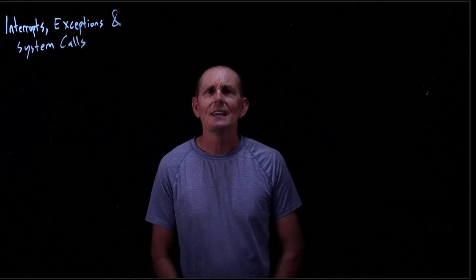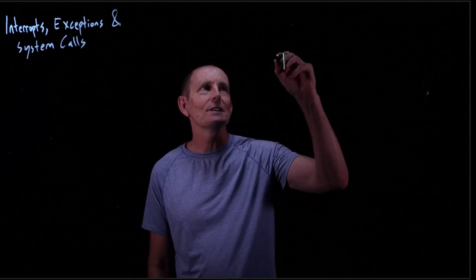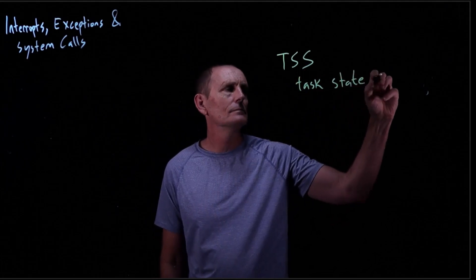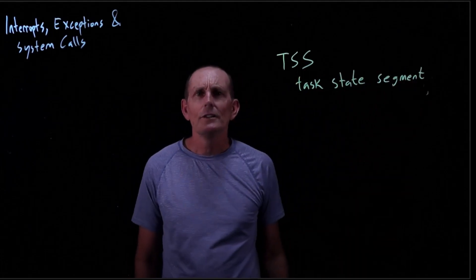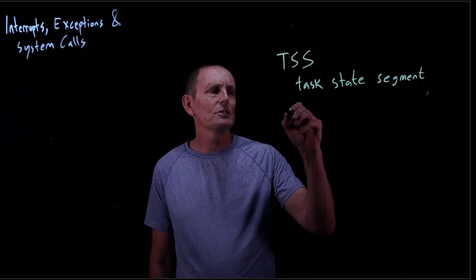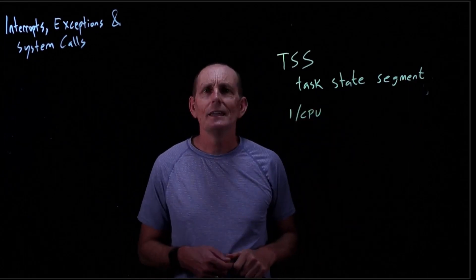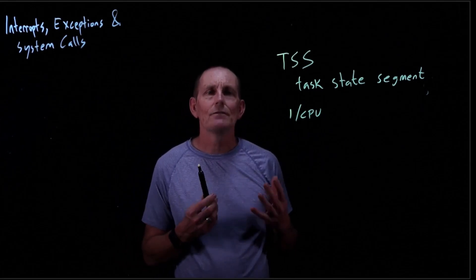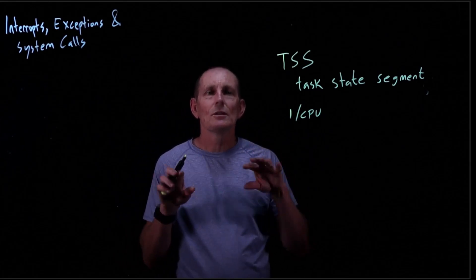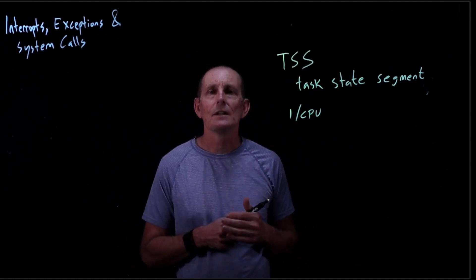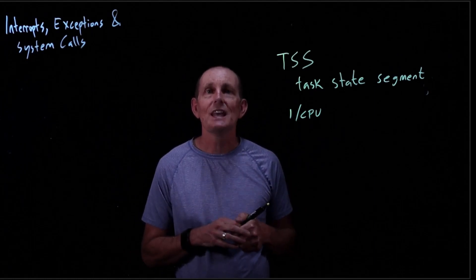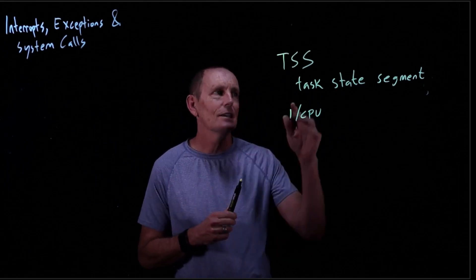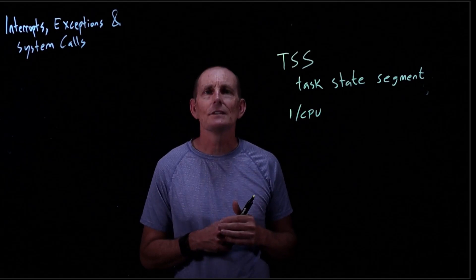What happens is we have these task state segments, TSSs. These task state segments will define for a CPU—there's one per CPU—what stack to use. In xv6, we have multiple CPUs that can be running kernel code at a time, so they have their own stack for each one. If we look at the TSS, there's a different TSS for each one that sets up a different stack.